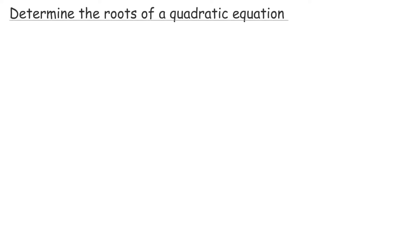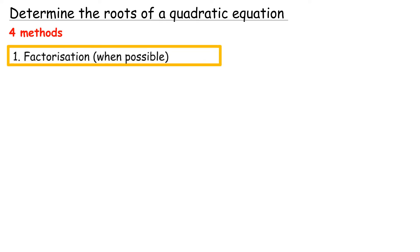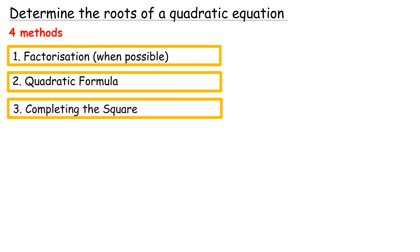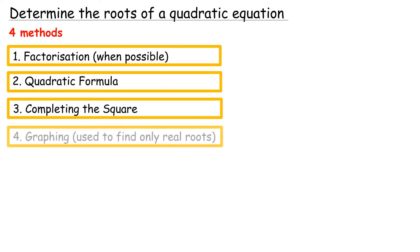To determine the roots of a quadratic equation, there are four methods: 1. factorization, when possible; 2. quadratic formula; 3. completing the square; 4. graphing, used to find only real roots. But in here, we will only learn the factorization method and the graphing method.